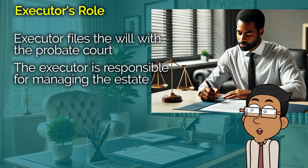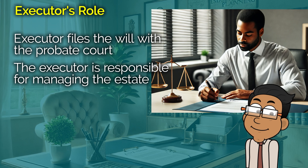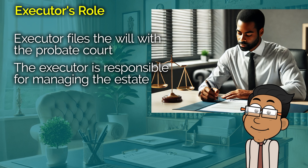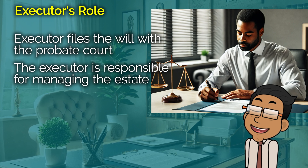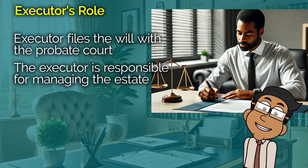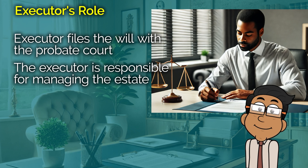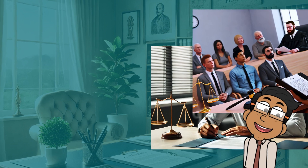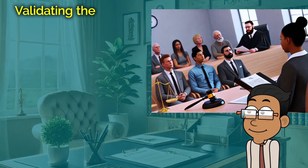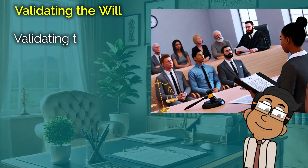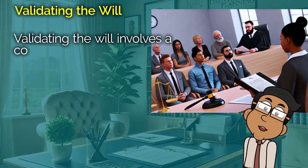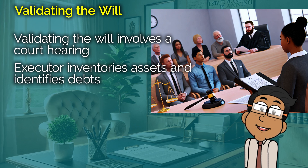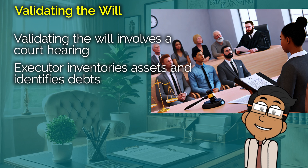Now, let's talk about what actually happens during the probate process. When a person dies, their will, if they have one, needs to be filed with the probate court. This is typically done by the executor named in the will — the person responsible for managing the estate through the probate process. If there's no will, the court will appoint an administrator. The first official step in probate is to prove the validity of the will, which often involves a hearing where the court reviews it to ensure it meets all legal requirements. If the will is deemed valid, the court will officially appoint the executor.